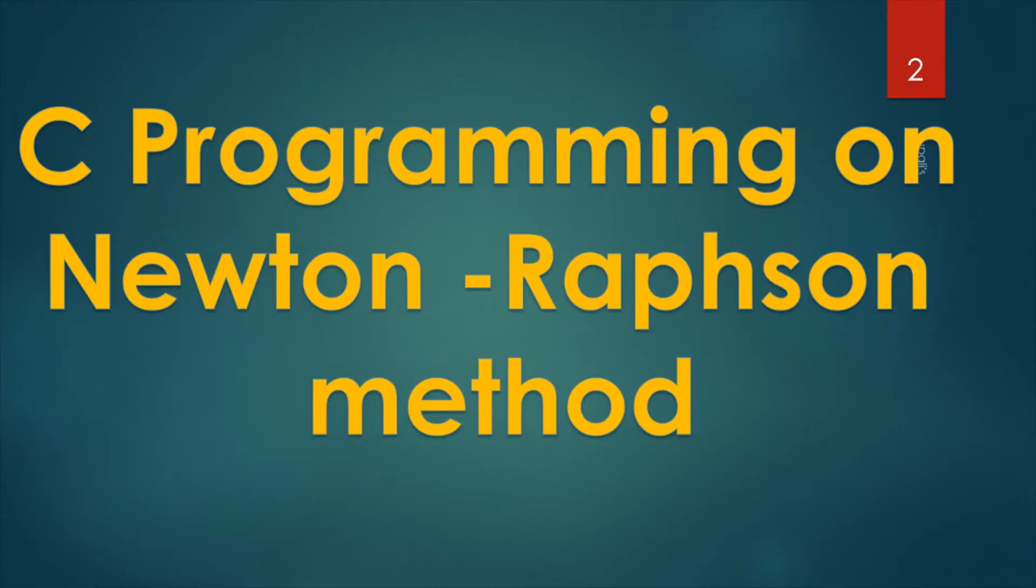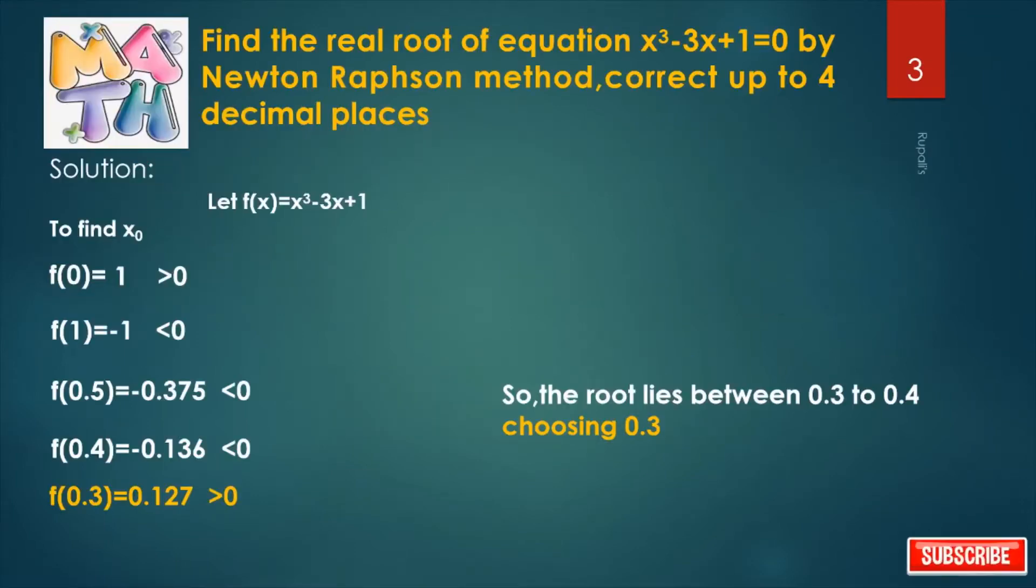Today we will learn how to implement Newton-Raphson method in C programming language. In our previous video, we already discussed this mathematical problem: how to get real root of this equation x³ - 3x + 1 = 0. And after calculation, we get that root lies between 0.3 to 0.4.